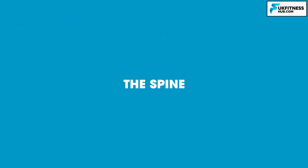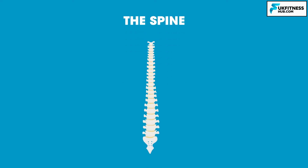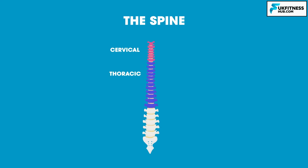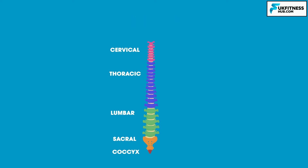Let's now focus in more detail on the spine. Your spine, also called the backbone or vertebral column, is made up of 33 bones called vertebrae, which provide your body with support and protect your spinal cord from injury. The vertebrae can be divided into 4-5 sections known as the cervical, thoracic, lumbar, sacral, and coccyx — with the sacral and coccyx sometimes grouped together.